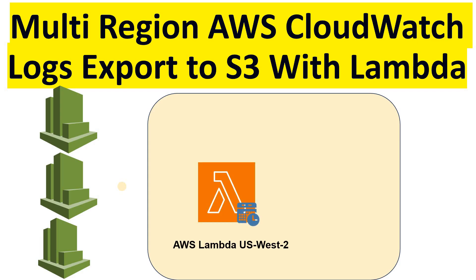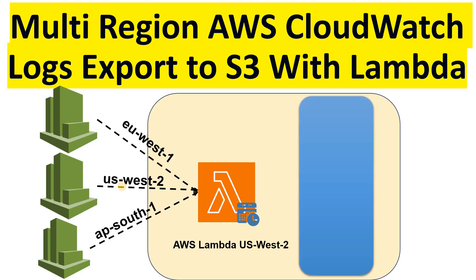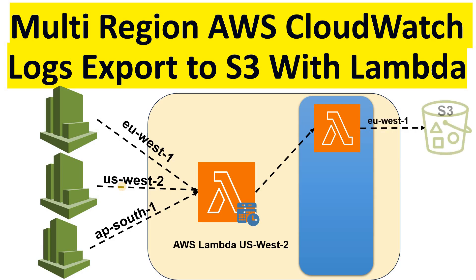The first Lambda is called the invoker Lambda. This Lambda will be scheduled to run periodically — basically daily — and it will list out all the AWS CloudWatch log groups present in the AWS account and then trigger the second Lambda. The second Lambda contains the logic to create a CloudWatch log export task.